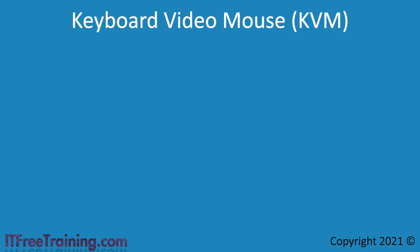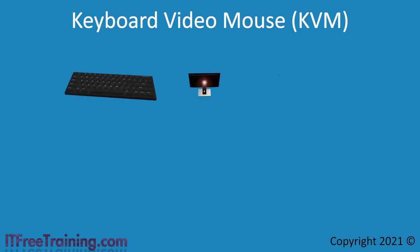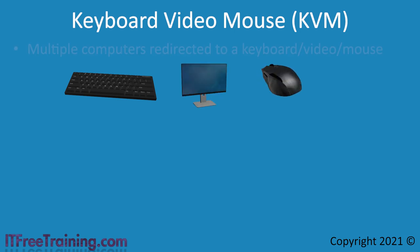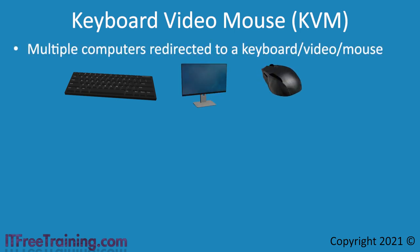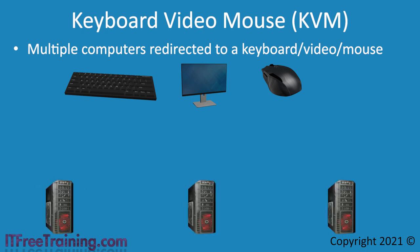KVM, or Keyboard Video Mouse, does as the name suggests. It takes a keyboard, monitor and mouse and connects them to multiple computers. To understand how this works, consider that I have three different servers. In order to use these servers, we need a keyboard and mouse to supply input and a monitor to see the output.